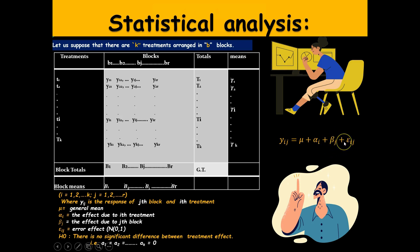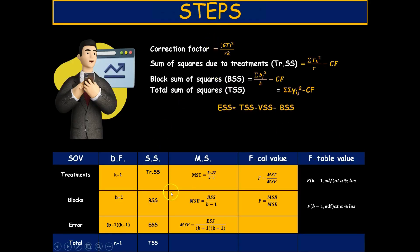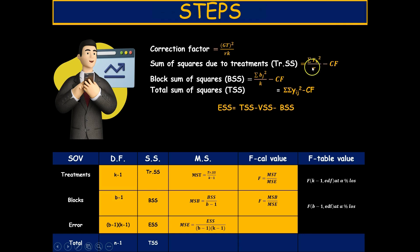We have two null hypotheses: one that there is no significant difference between treatments, and another that there is no significant effect across blocks. The ANOVA for RCBD is similar to CRD but includes an additional source of variation due to blocks. The steps are: get the grand total, compute the correction factor (CF), then compute sum of squares for treatments — square each treatment total, divide by the number of blocks, and subtract the CF.